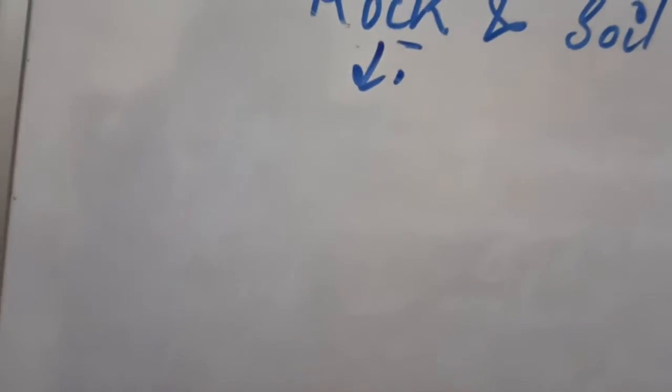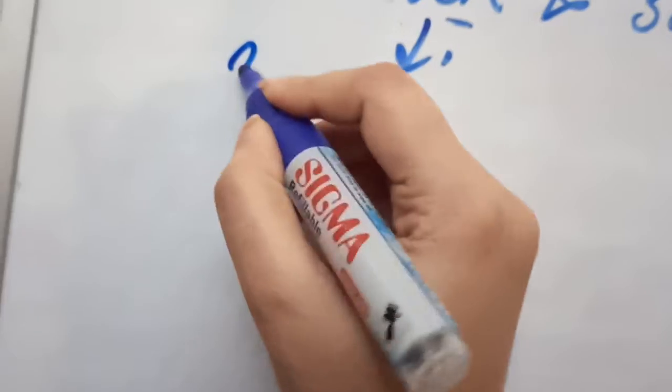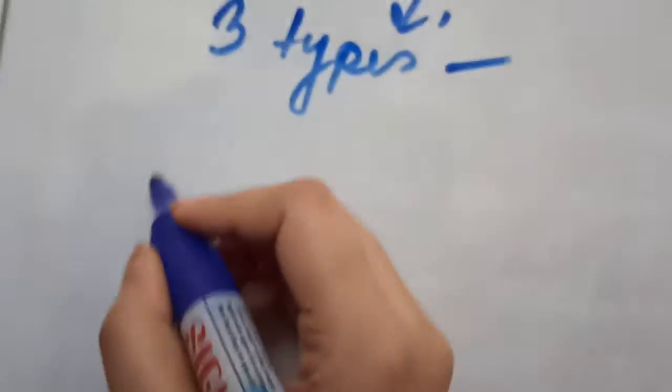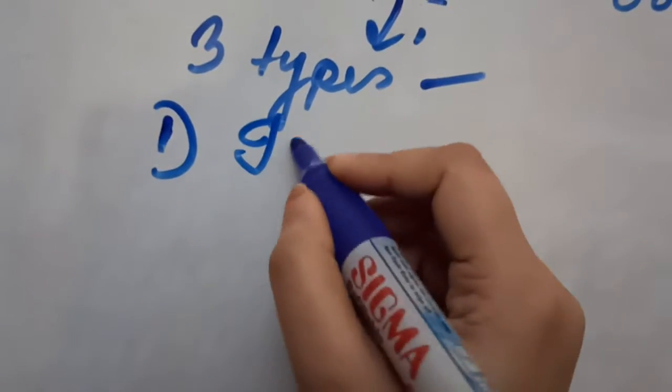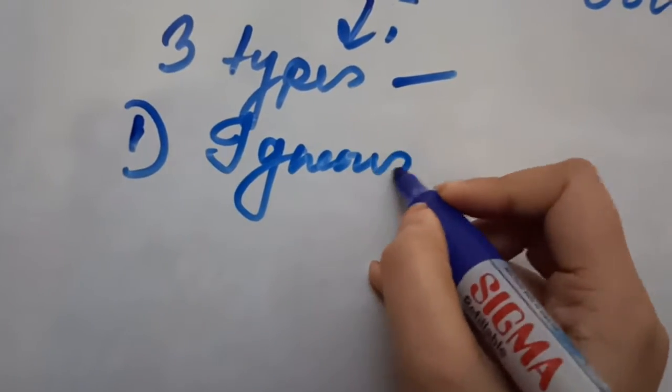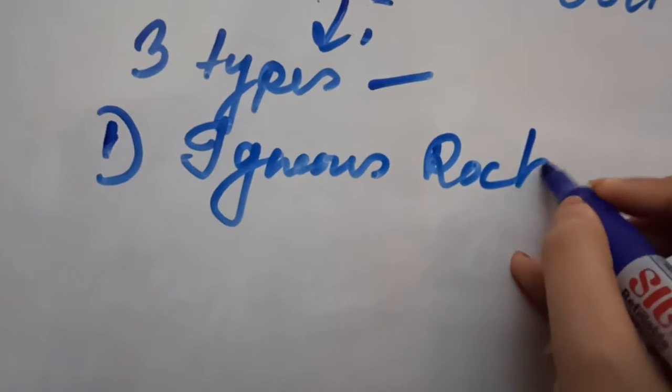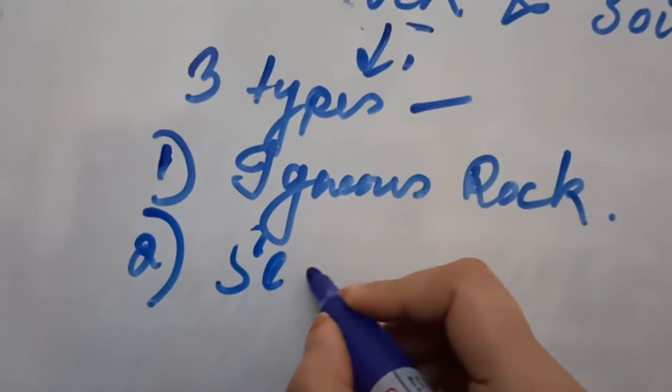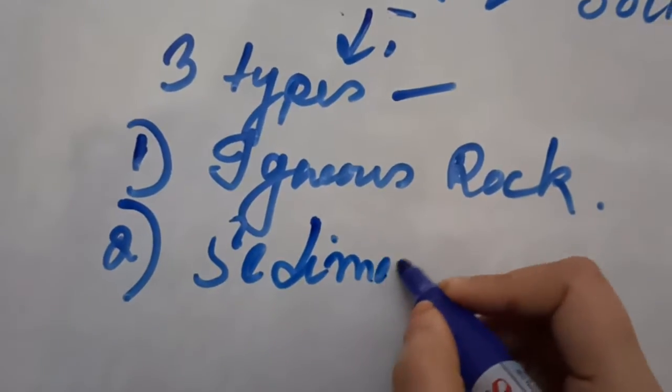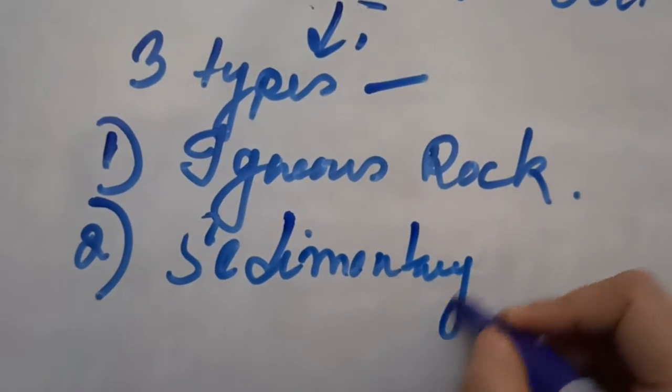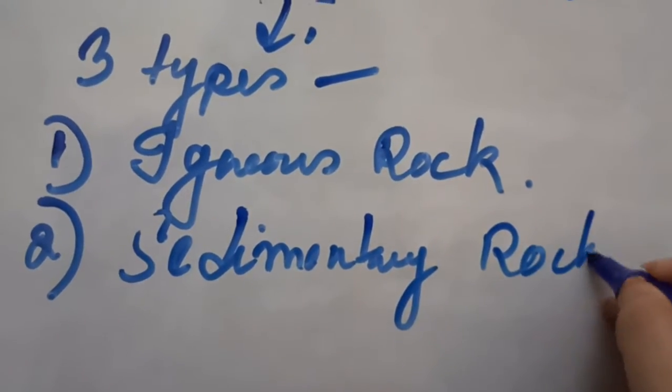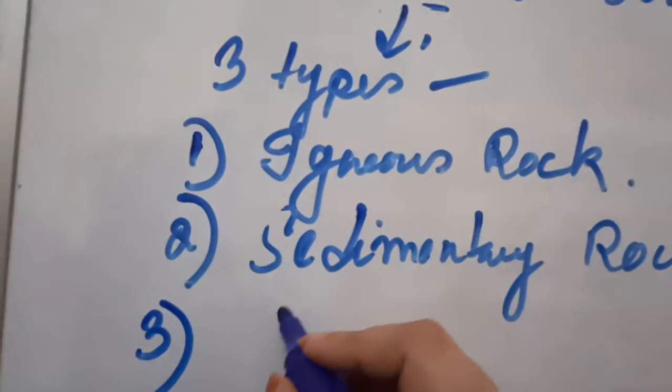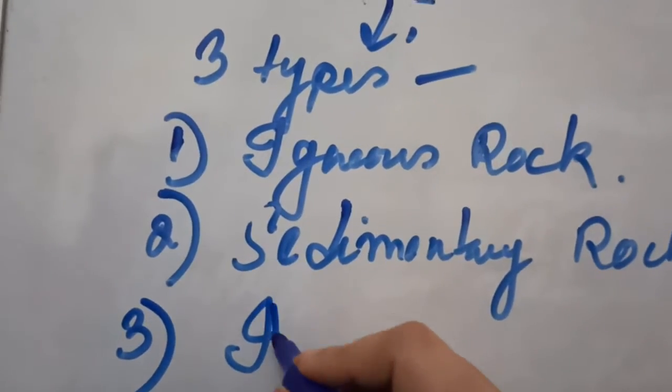The rocks can be classified into three groups or three types. What are those? Take down: number one is the igneous rock, then the sedimentary rock, and the last one is the metamorphic rock.